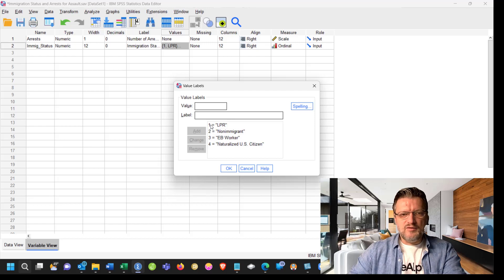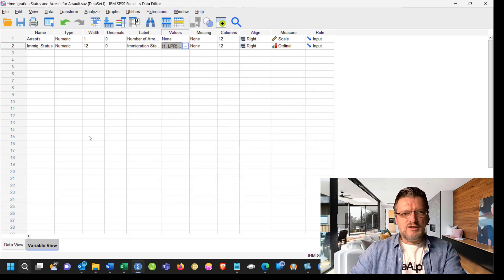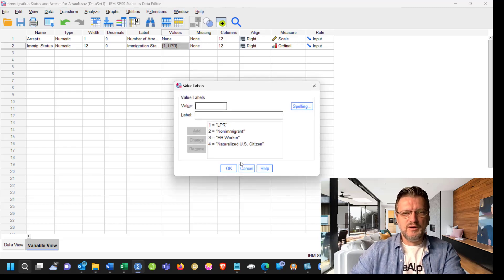SPSS works with numbers. Therefore, we add values. And these are labels, which in theory we call attributes. So the variable immigration status, the type is numeric in SPSS because, like I said, it works with numbers. But generally, it's a categorical variable, ordinal level of measurement with four categories. Now, because it has four categories and we need to figure out the number of arrests within each of these categories and the difference between them, we conduct a test that's called Analysis of Variance or ANOVA.